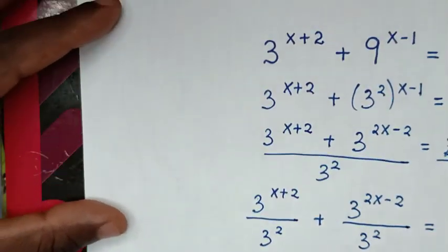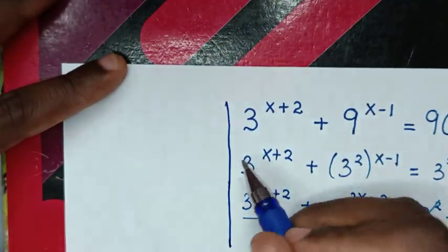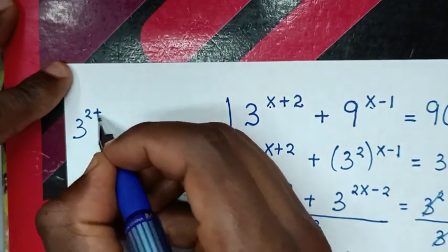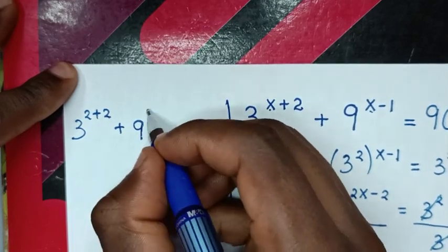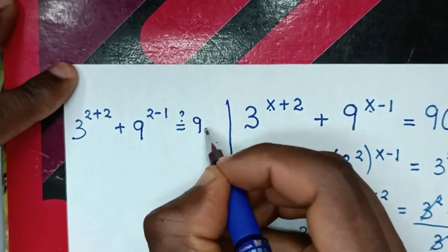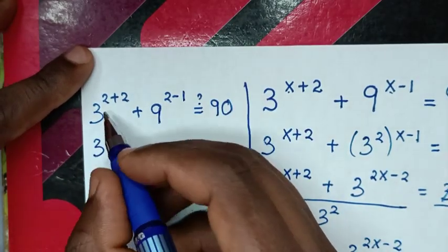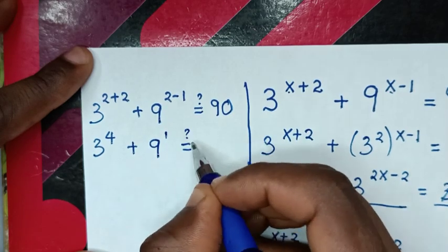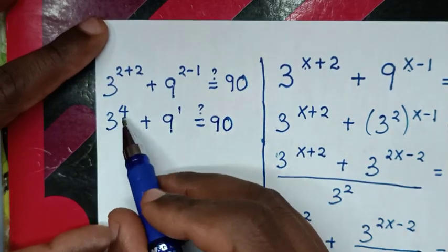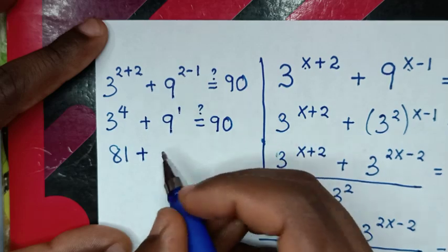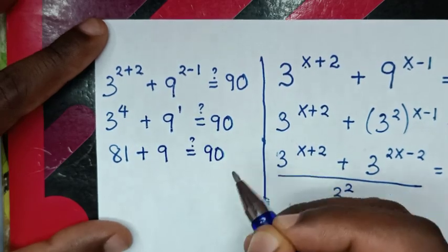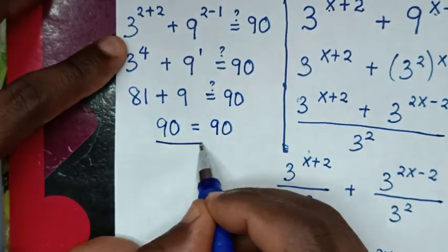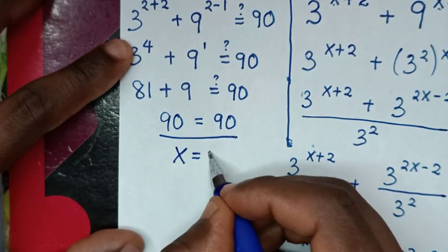Now to check if the value of x is correct, we substitute x equals 2 into the equation. It will be 3 power of 2 plus 2, which is 3 power of 4, plus 9 power of 2 minus 1, which is 9 power of 1. Is it equal to 90? Then 3 power of 4 is 81, plus 9 power of 1 is 9, is it equal to 90? Yes, 81 plus 9 is 90, equal to 90. So left side equals right side — it is true that x equals 2.